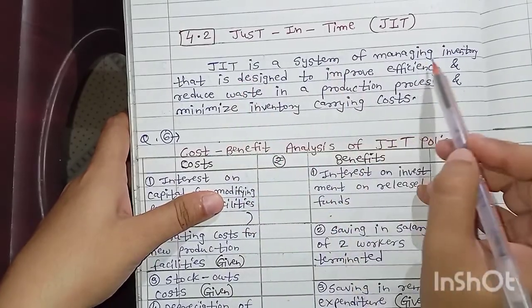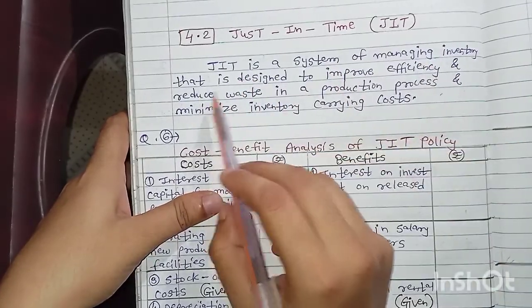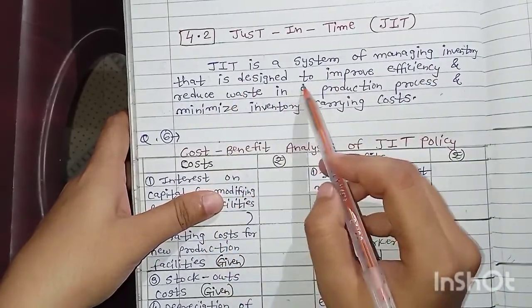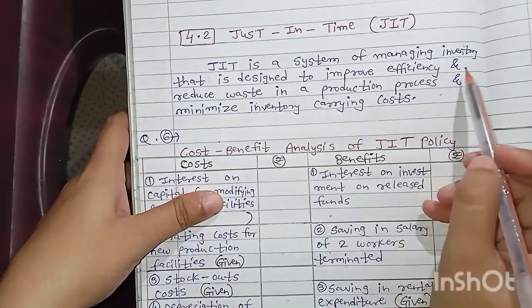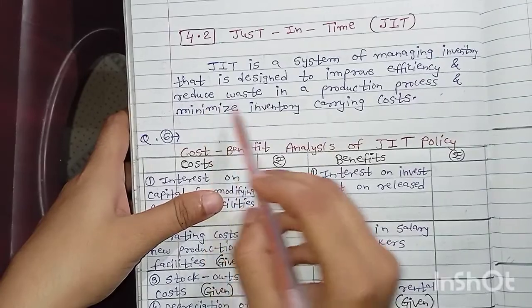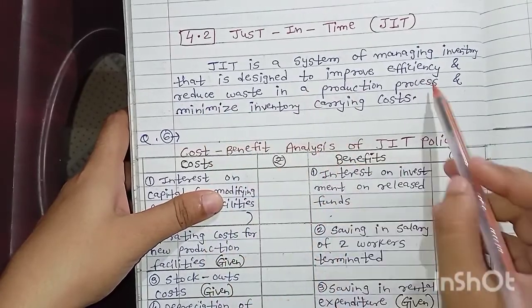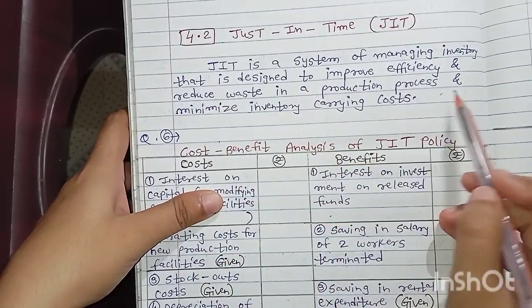JIT is a system of managing inventory that is designed to improve efficiency and reduce wastage in the production process and minimize inventory carrying cost.